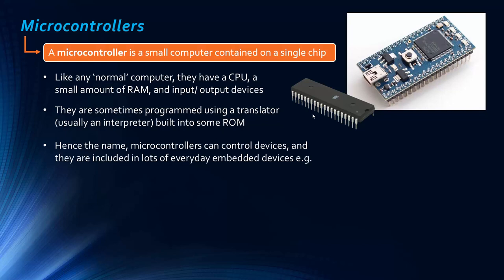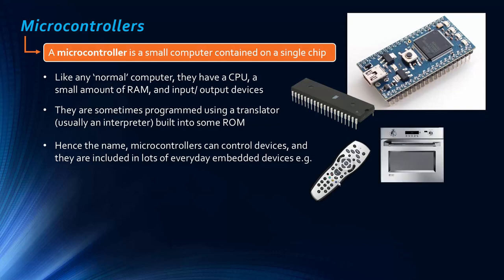Usually microcontrollers serve very fixed purposes in devices. They exist in lots of everyday devices called embedded devices, where they have a very single purpose and can control those devices. For example, a remote will have a microcontroller, especially a relatively advanced one. A more expensive oven with a display and certain features will have a microcontroller controlling it. Also things like a car key — the controller would probably be in the car at least when it's being received. Generally, the more expensive your devices, the more likely there'll be a microcontroller in them.